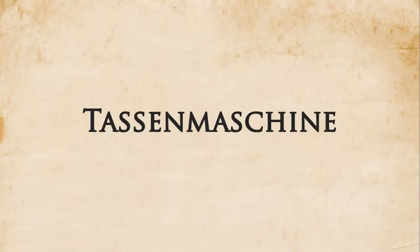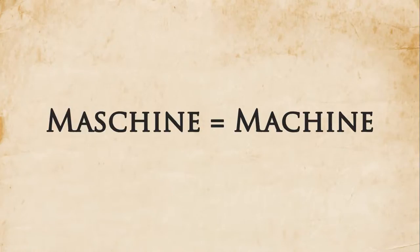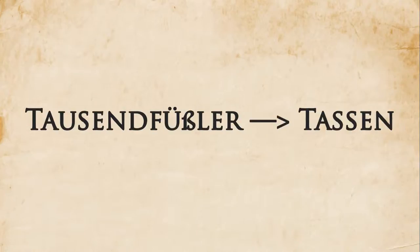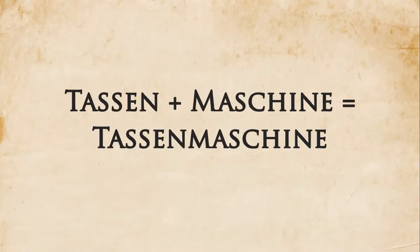Another example is the term Tassenmachin — those of you who read the first Growlt book will recognize it as the giant lumbering mechanical beast that Einse has to escape and later fight. This is actually a compound word. The second part, Machin, is the German word for machine, spelled just like that. The first part comes from the German word for centipede, which is Tassenfussle — a very long and complicated word. My aunt is German and tried to teach me, but as I told her, my mouth doesn't quite move that way.